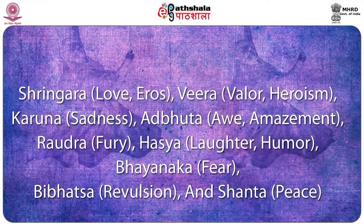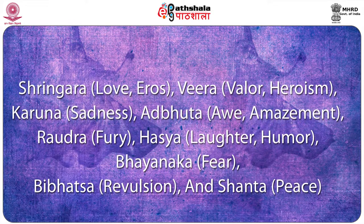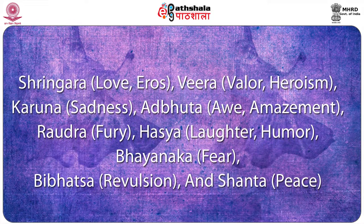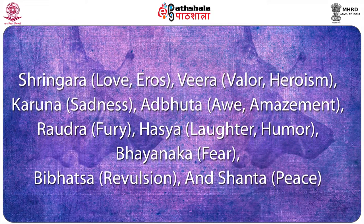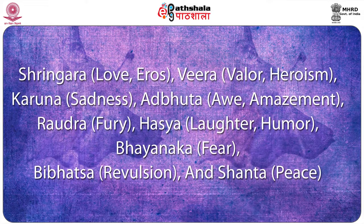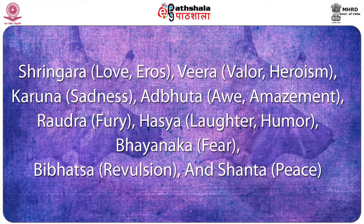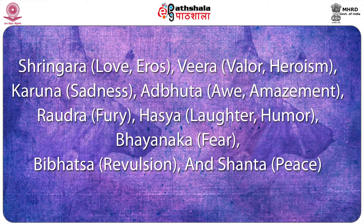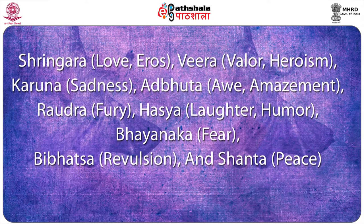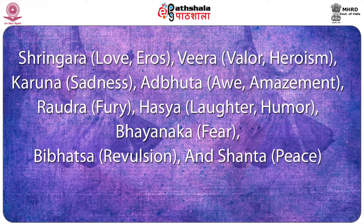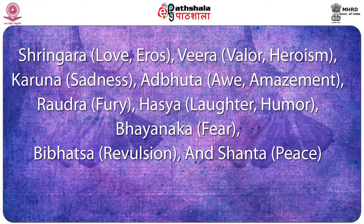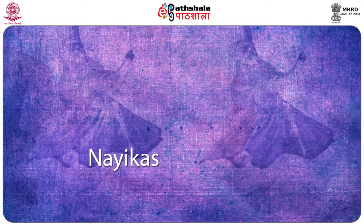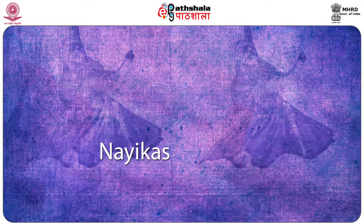The remaining Navarasa are: Haasya (Laughter), Bhayanaka (Fear), Vivastha (Revulsion), and Shanta (Calm/Peace) — and countless passing feelings that may be enacted. The Nathya Shastra lists eight types of Naikas based on emotional circumstances, as well as categorizations like the ten graces of women and the ten stages of love.